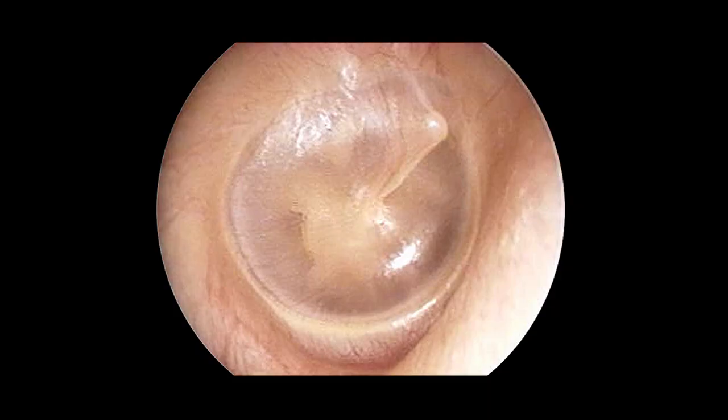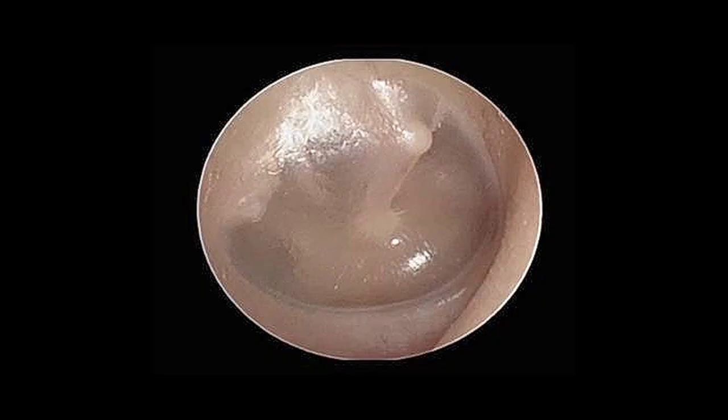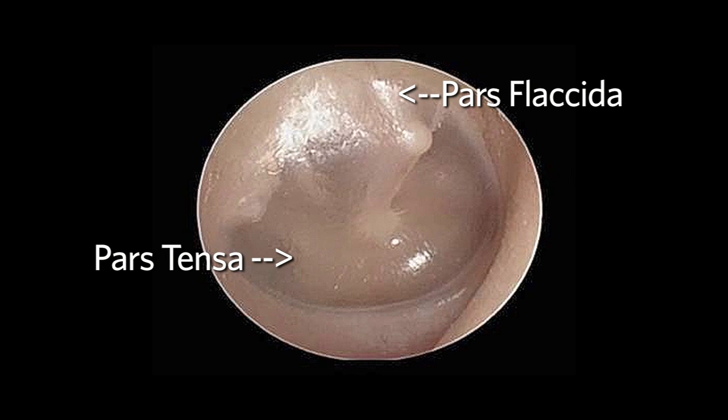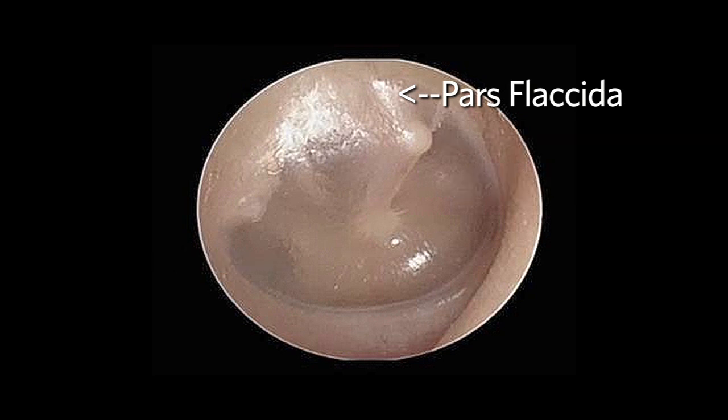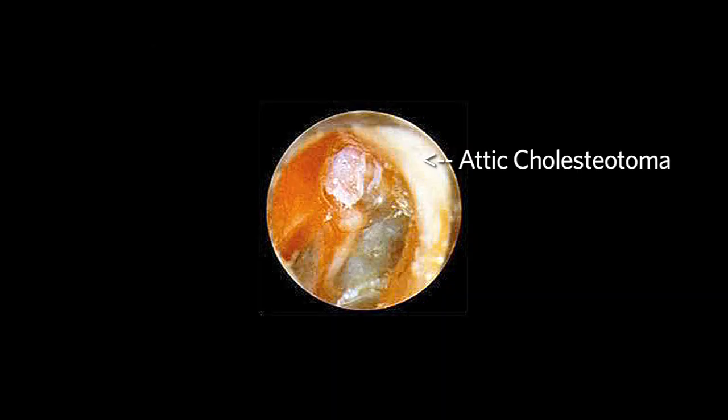Surrounding the edge of the tympanic membrane, one often sees a white structure which is the cartilaginous annulus. The tympanic membrane itself is made up of two components: the pars tensa, which makes up about 90% of the tympanic membrane, and the pars flaccida. The pars flaccida sits above a bony prominence known as the short process of the malleus. The pars flaccida may be retracted and be the presenting site of a cholesteatoma.